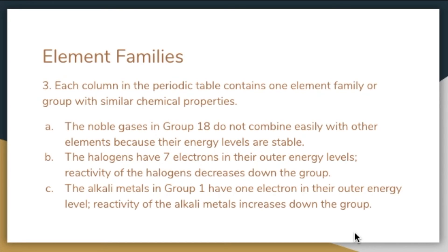The halogens are the elements in Group 17. Like all members of this family, fluorine needs one electron to obtain a stable outer energy level. The easier it is for the halogen to gain that electron and form a bond, the more reactive it is. Fluorine is the most reactive halogen because its outer energy level is closest to the nucleus. The reactivity of halogens decreases down the group as the outer energy levels of each element get farther from the nucleus — so bromine in Period 4 is less reactive than fluorine in Period 2.